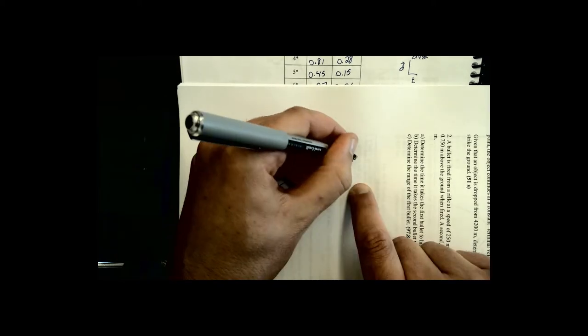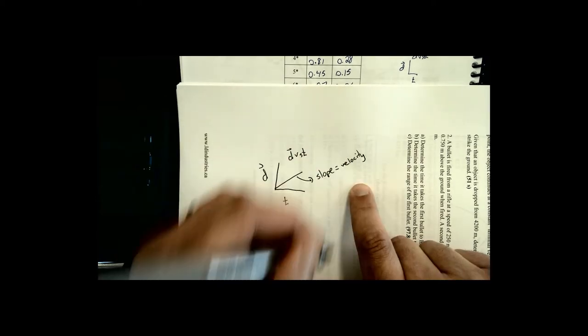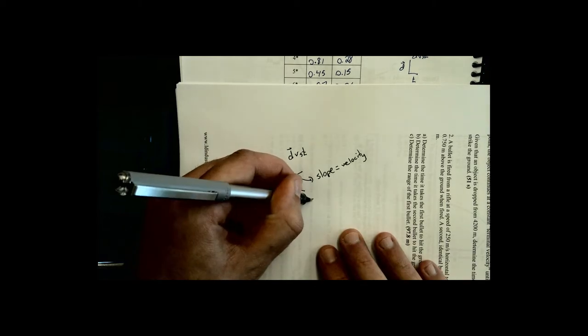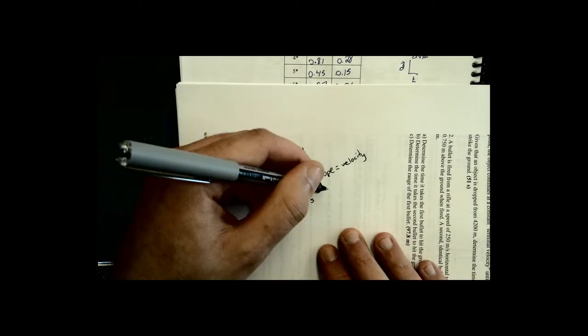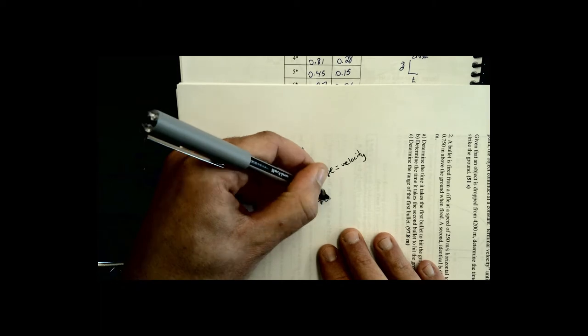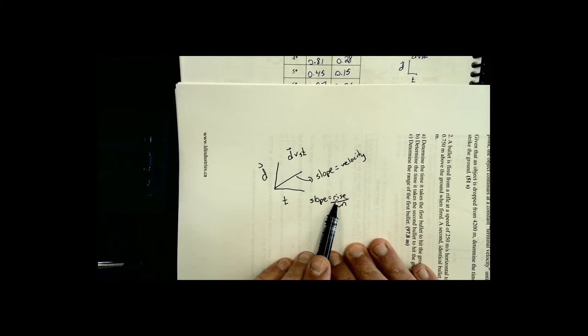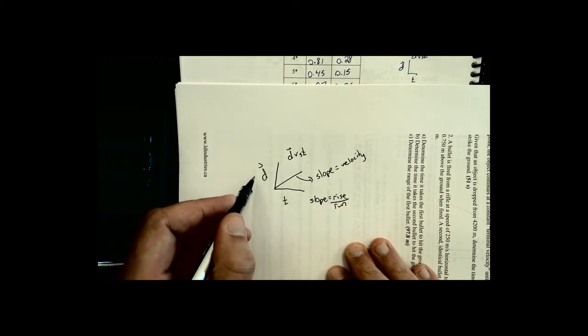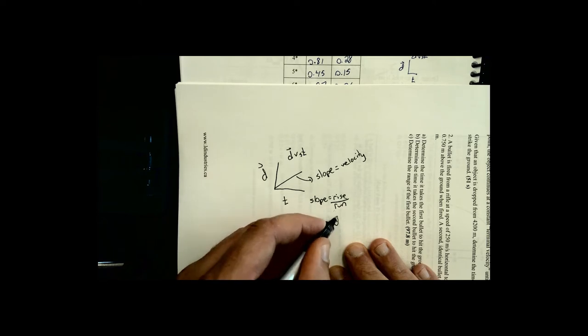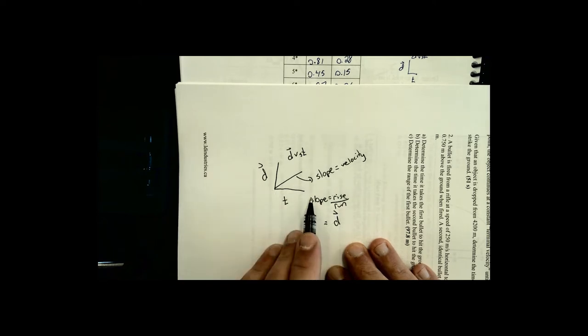I don't know if your Physics 20 teacher or Science 10 teacher told you why that was. Maybe it's just magic or maybe there's a reason for it. There's a reason for it. Here's the reason why that slope is velocity when you're talking about a displacement time graph. Slope in general is rise over run. Now if you apply rise over run to this specific graph, the rise of the graph is displacement and the run of the graph is time.